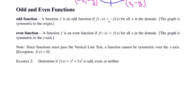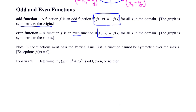Let's look at odd and even functions. A function f is odd if f of negative x equals negative f of x for all x in the domain — and odd functions are symmetric to the origin. For an even function, you want f of negative x to equal the original f of x for all x in the domain. Even functions are symmetric to the y-axis.